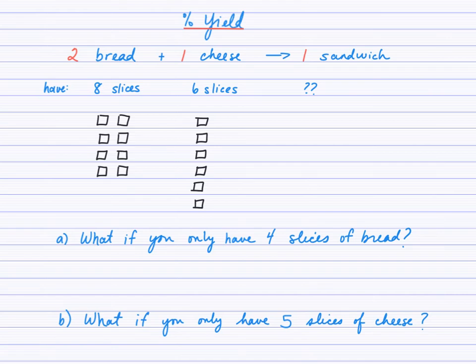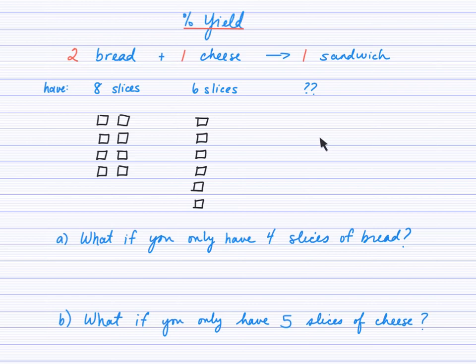Percentage yield. We'll start this lesson off by thinking of an analogy, where we take two slices of bread and one slice of cheese to make one sandwich. So let's imagine that you are having friends over and you have eight slices of bread and six slices of cheese. How many sandwiches will you be able to make?